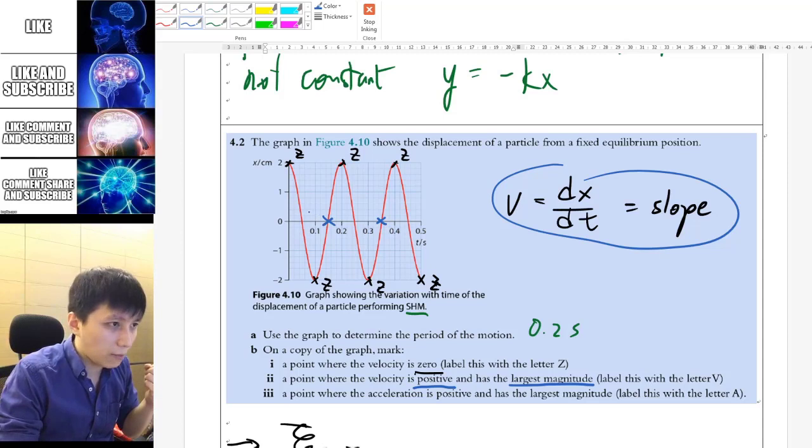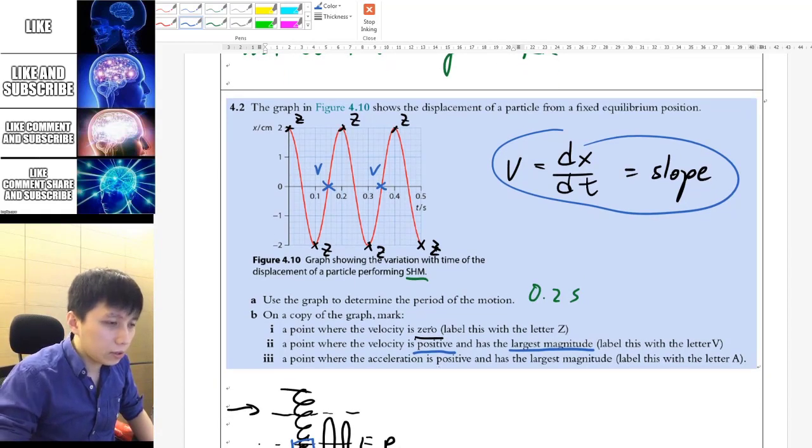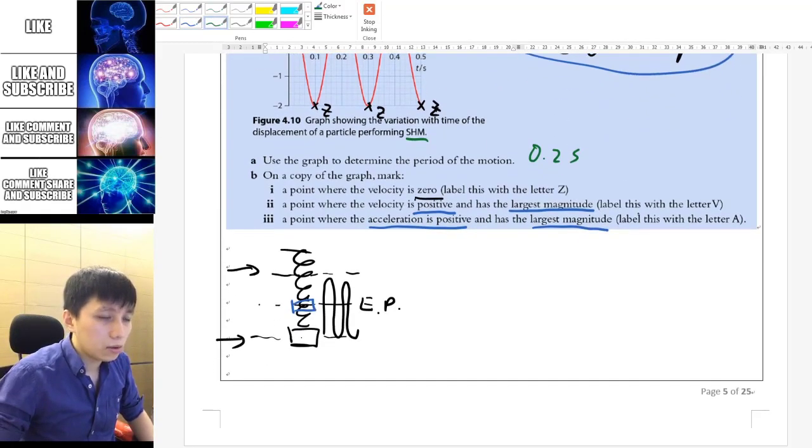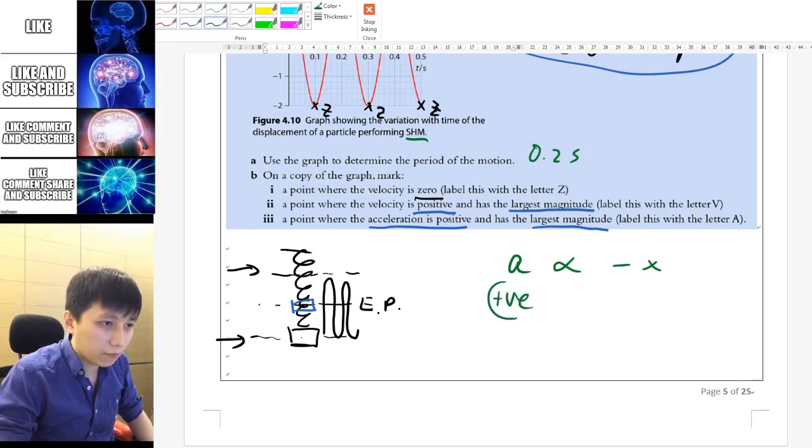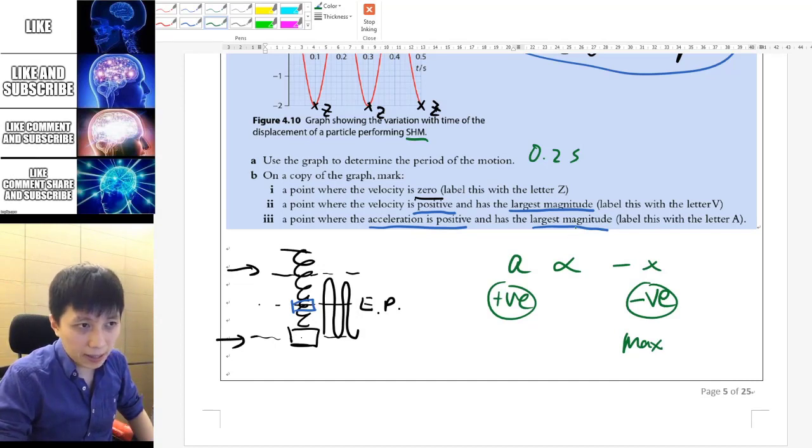Label it as V. For number three, it asks you to determine the point where acceleration is positive with the largest magnitude. One thing that you should recall is, like we said, a proportional to negative x. So that means when acceleration is positive, then x will be negative, right? Because that's the relationship that they have. At the same time, in terms of magnitude, when x is at the largest magnitude, a is also at the largest magnitude.